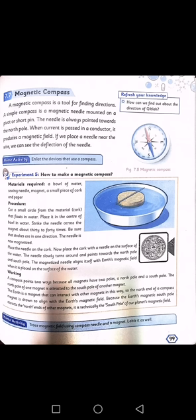Working: A compass points two ways because all magnets have two poles, a north pole and a south pole. The north pole of one magnet is attracted to the south pole of another magnet. The Earth is a magnet that can interact with other magnets in this way, so the north end of a compass...